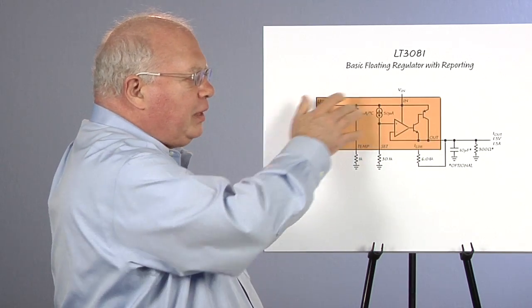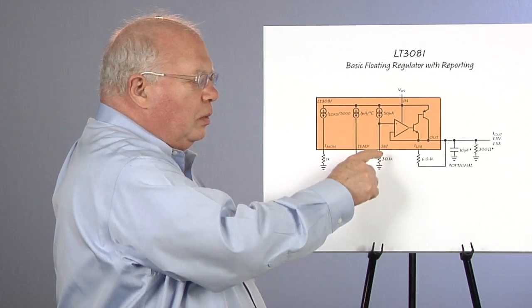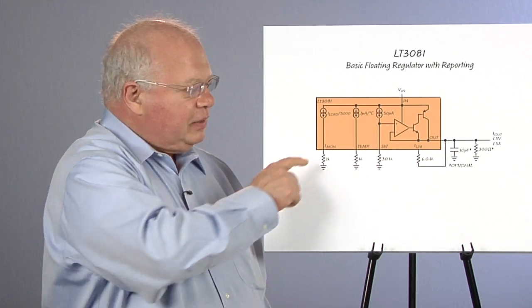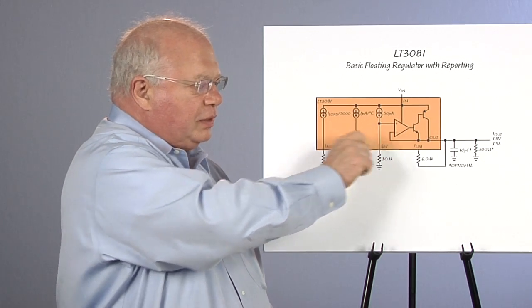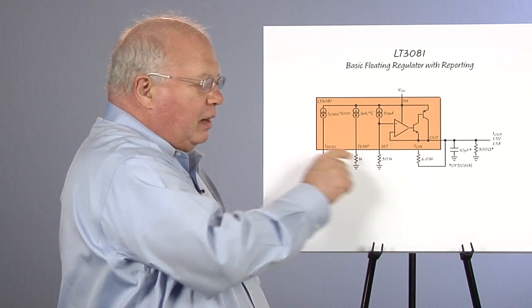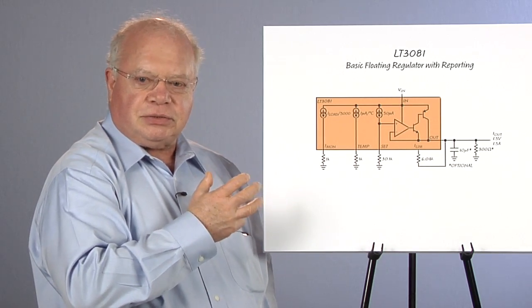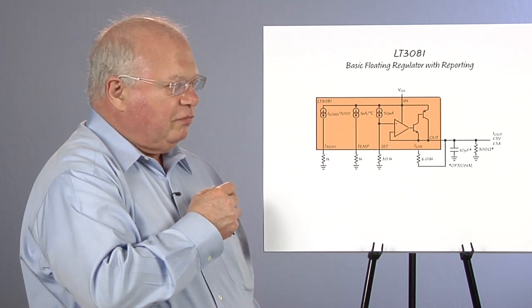Now this is a floating regulator. What happens if we short the output? We can still get useful signals out of our current monitors. These have a compliance of 400 millivolts above the output voltage. So if the output is tied to ground, these will still read correctly as long as the resistors are small enough that our voltage across them is under 400 millivolts.